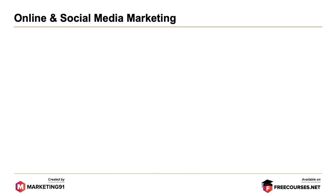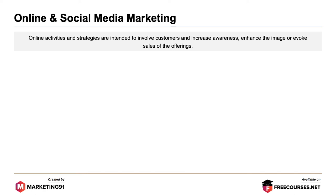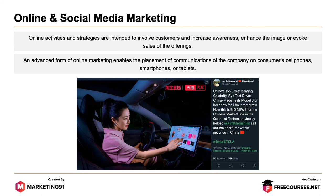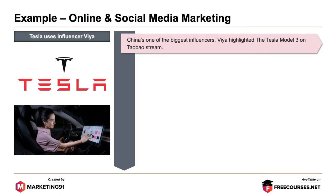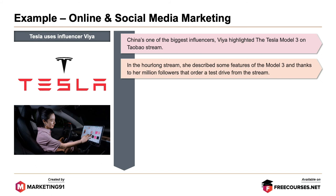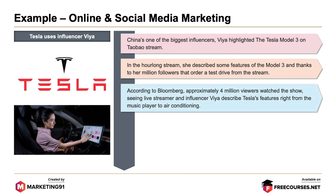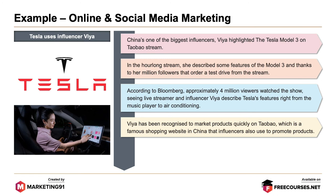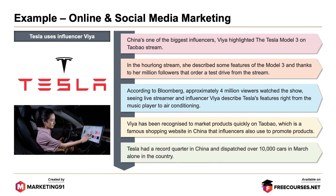Next, online and social media marketing. Online activities and strategies are intended to involve customers and increase awareness, enhance the image or evoke sales of the offering. Advanced forms of online marketing enable the placement of communicating companies on consumer cell phones, smartphones or tablets. For example, Tesla uses influencer VR. China's biggest influencer VR highlighted the Tesla Model 3 on Taobao's live stream. The hour-long stream described features of the Model 3 to a million followers who could order a test drive. Approximately 4 million viewers watched the show. VR is recognized for marketing products quickly on Taobao, a famous shopping website in China. Tesla had a record quarter in China and dispatched over 10,000 cars in March alone.